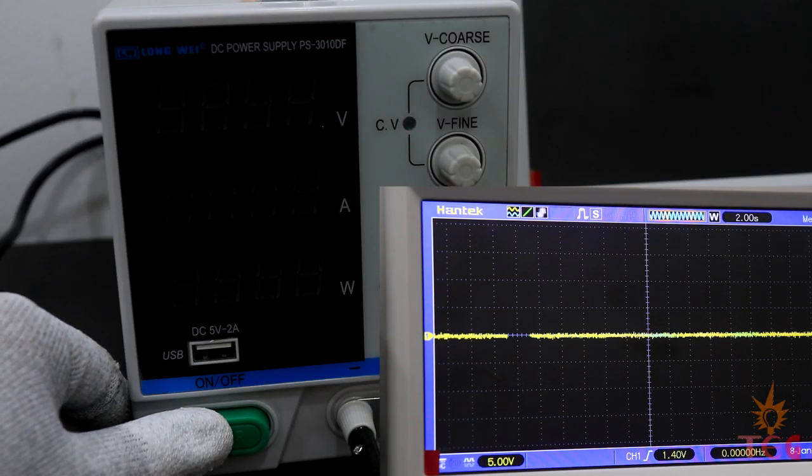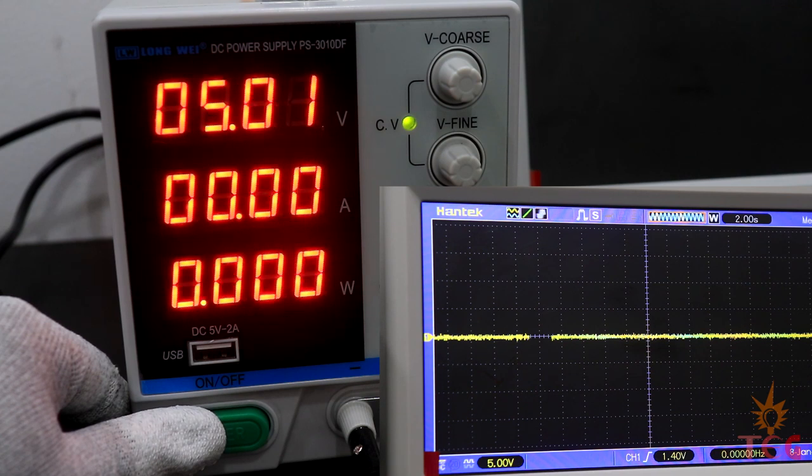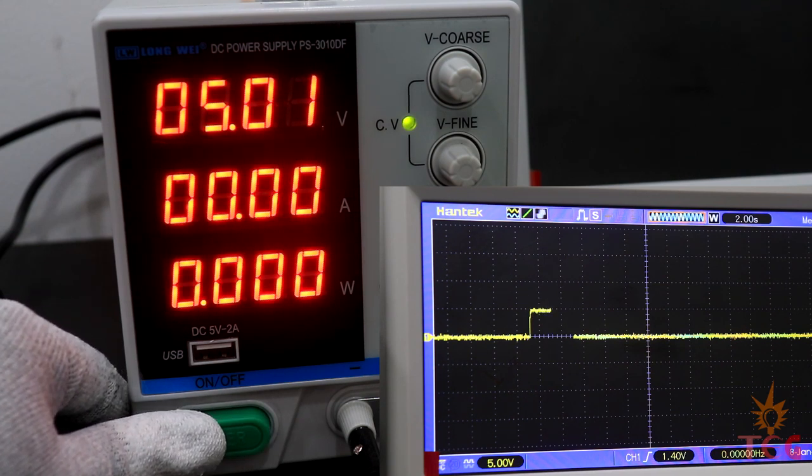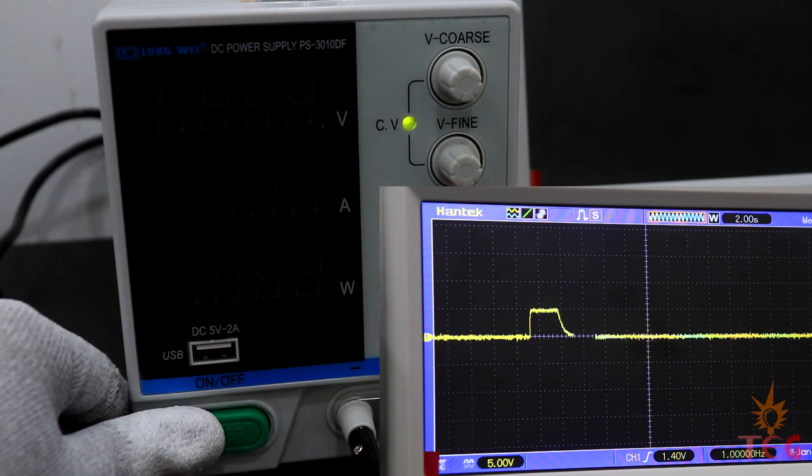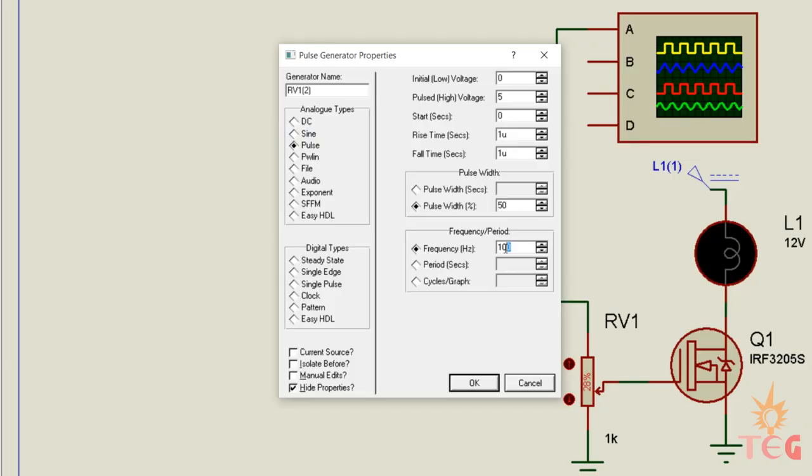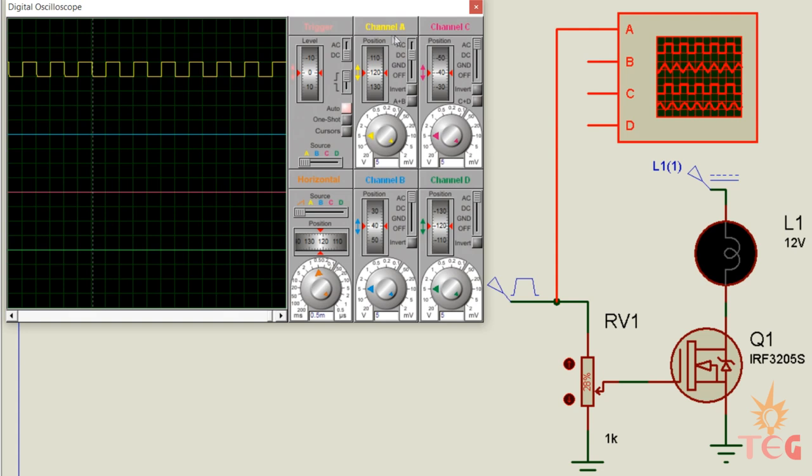Suppose we have an input voltage of 5 volts. It can either be 5 volts or 0 volts. Now if it is switched on and off with very high frequency, we can get a waveform like this. Let's say on time of this waveform is 50% of the total time.